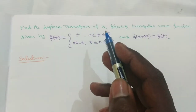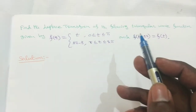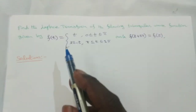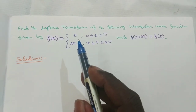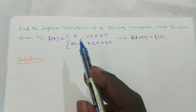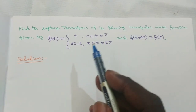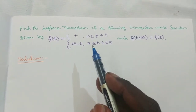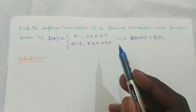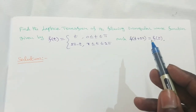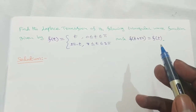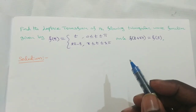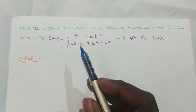Find the Laplace transform of the following triangular wave function, given by f(t) = t in the interval 0 to π, f(t) = 2π − t in the interval π to 2π, and f(t + 2π) = f(t). We have to find out the Laplace transform of this given function.